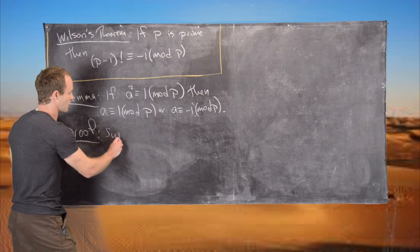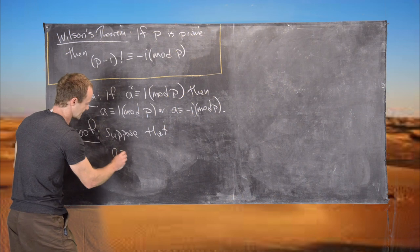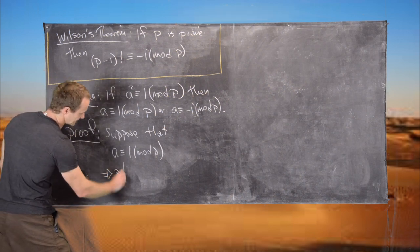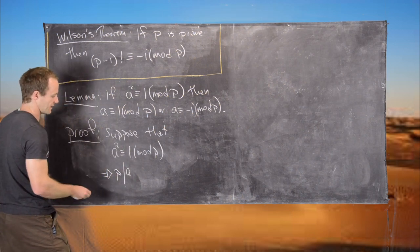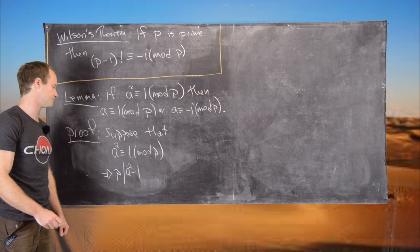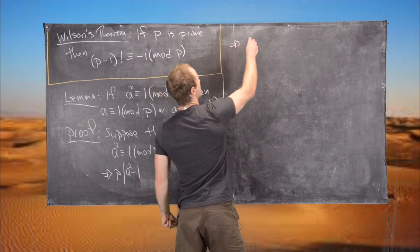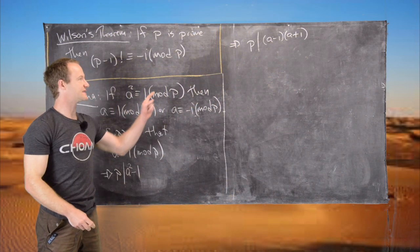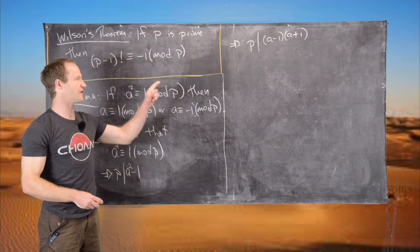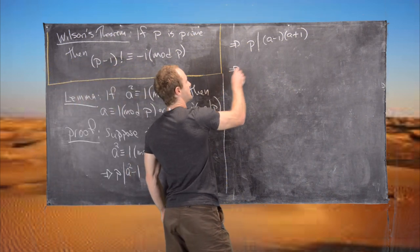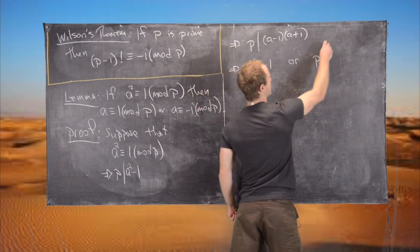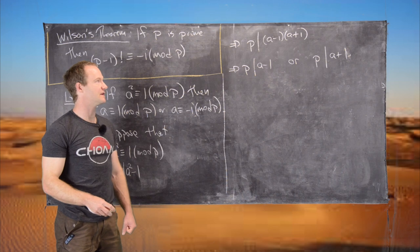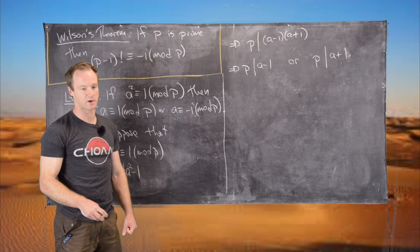Let's suppose that a squared is congruent to 1 mod p. That means that p divides a squared minus 1. From that, it follows that p divides a minus 1 times a plus 1. Now we can use a lemma proved earlier: if p divides a minus 1 times a plus 1, then p divides a minus 1 or p divides a plus 1. We used this with: if p divides a times b, then p divides a or p divides b — here applied to a minus 1 and a plus 1.